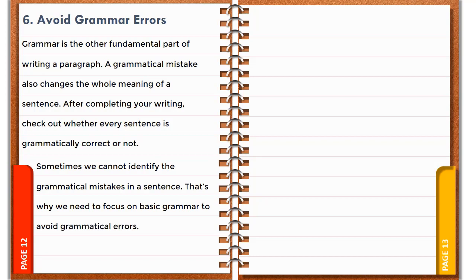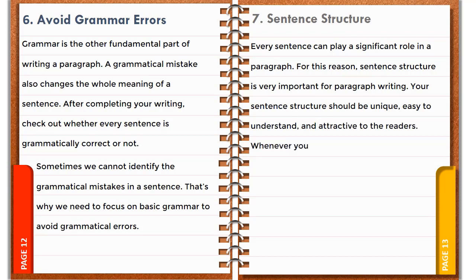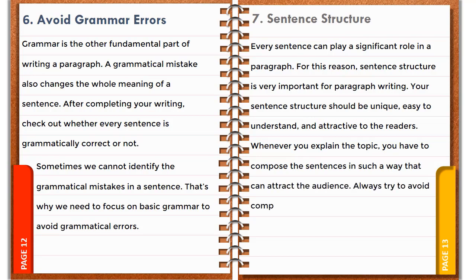Number 7: Sentence structure. Every sentence can play a significant role in a paragraph. For this reason, sentence structure is very important for paragraph writing. Your sentence structure should be unique, easy to understand, and attractive to the readers. Whenever you explain the topic, you have to compose the sentences in such a way that can attract the audience. Always try to avoid composing complex sentences.